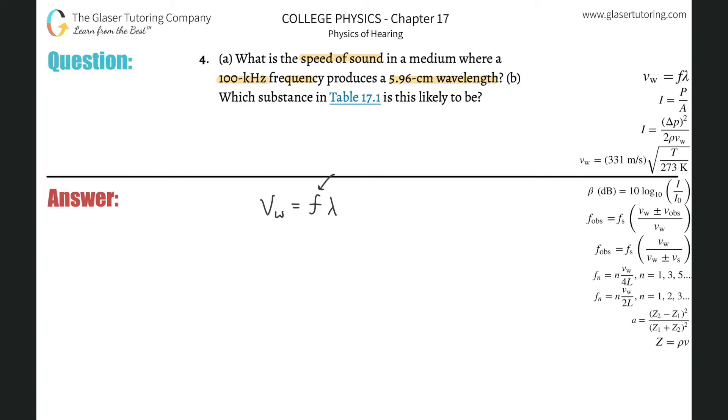Frequency is always measured in hertz, or cycles per second, or just per second, or second to the minus one - they all mean the same thing. Wavelength should be measured in meters, so we've got to make sure we have the appropriate units.